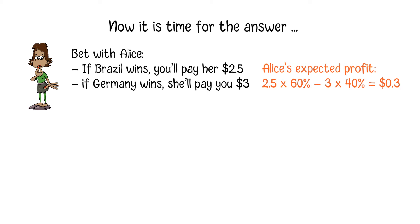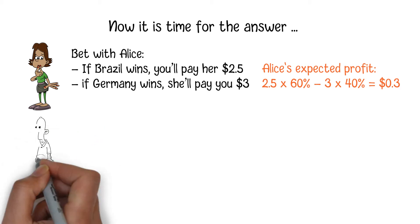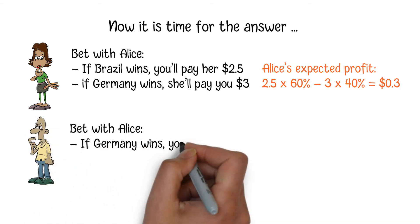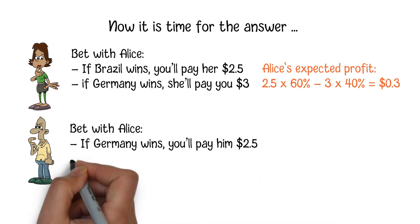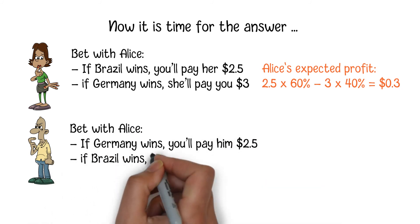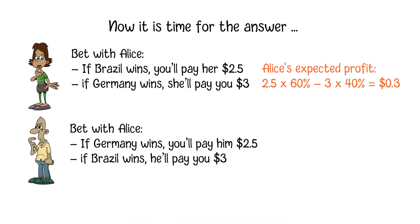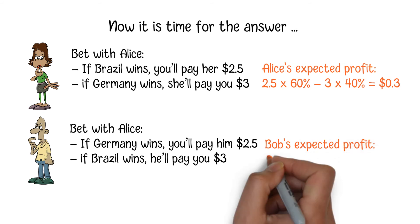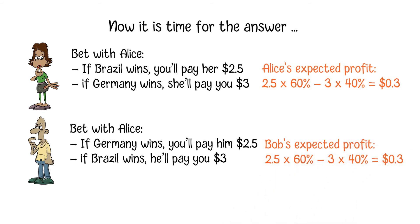Then you will make the same bet with Bob: you'll pay him $2.50 if Germany wins, and he'll pay you $3 otherwise. Bob will also agree with this bet because his expected profit will also be 2.5 × 60% − 3 × 40% = 30 cents.